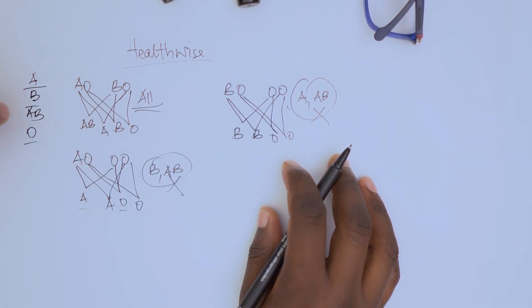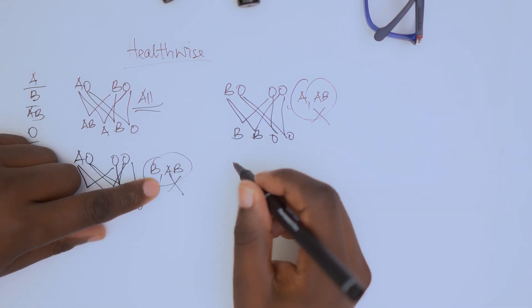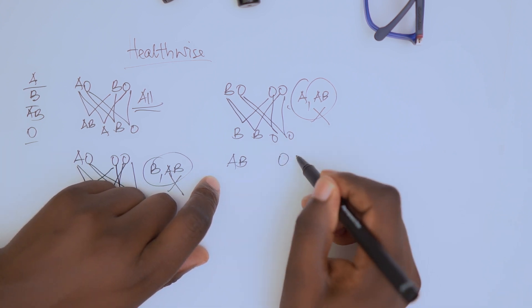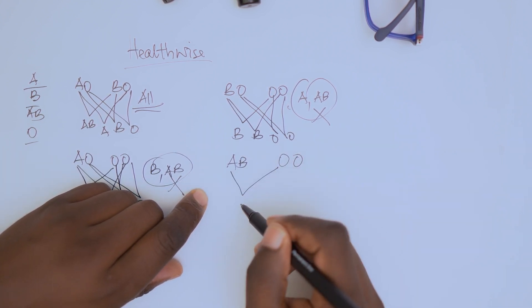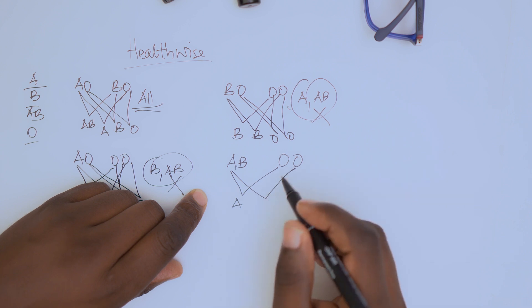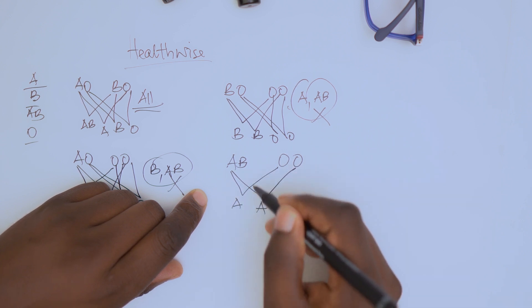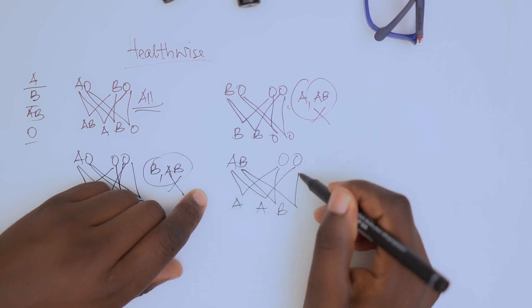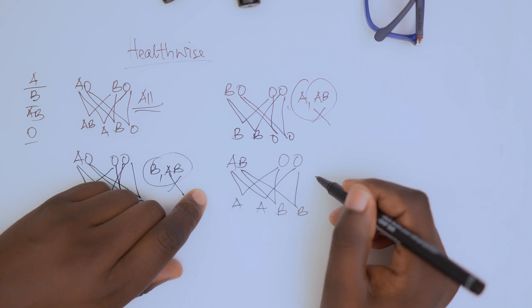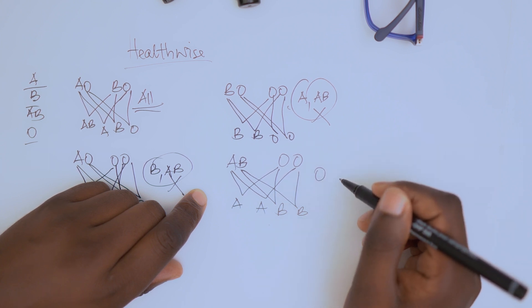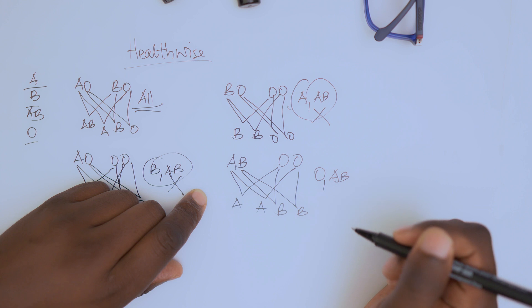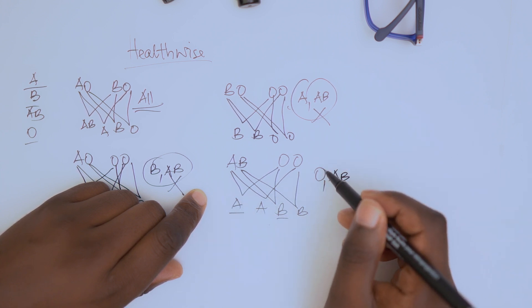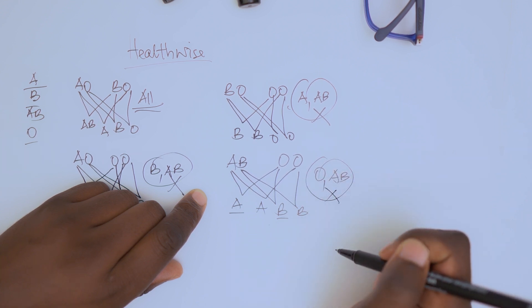We are done with A and B. Let's go to AB. If one partner is AB and the other partner is O, you're going to get A and B. So in this family, you cannot find O and you cannot find AB.